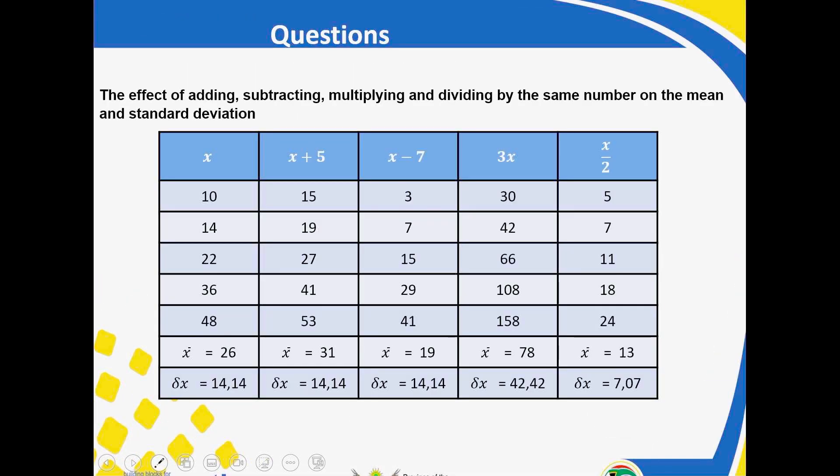So then this is the first question that I wanted us to look at. The effect of adding or subtracting, multiplying, dividing by the same number on the mean and standard deviation. Right. If you check here, my first column here is the values of x. These are just the scores that you have. Then the second column, we are looking at what happens when you add 5 to those scores.